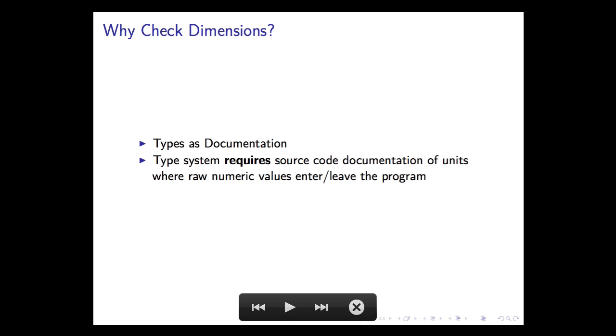Once you put those dimensions into the code, instead of having a double with a comment on it that says kilograms, you actually have a mass. And so the type system requires the source code to say what units you're using whenever you take a raw double and you want to turn it into a mass, and vice versa when you're taking it back out again.